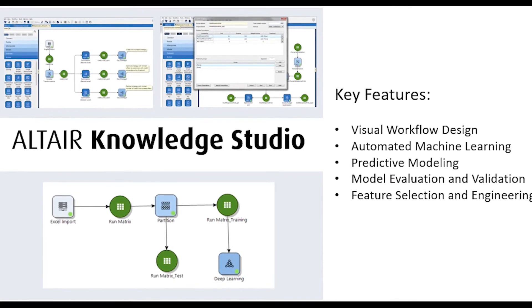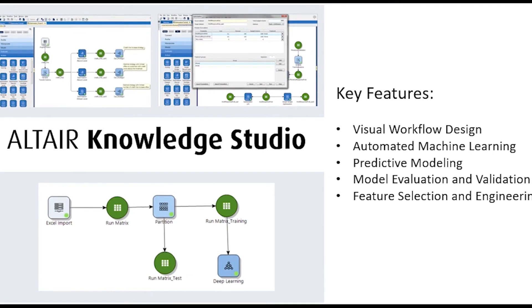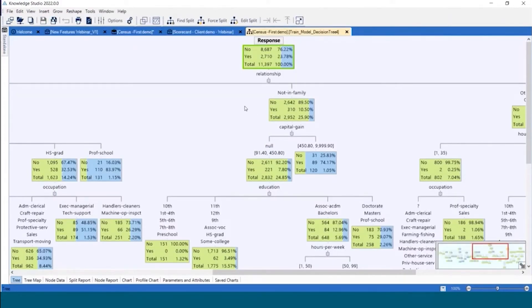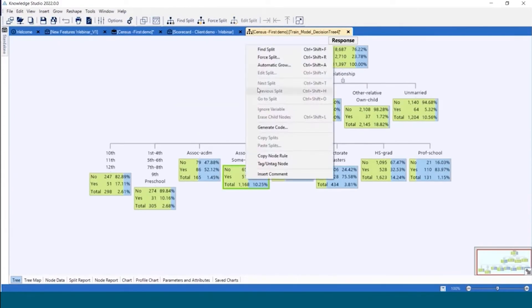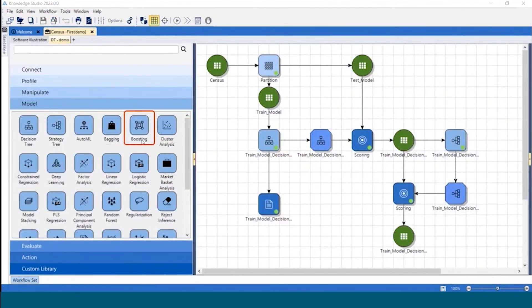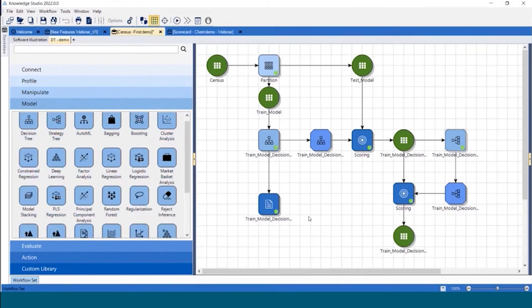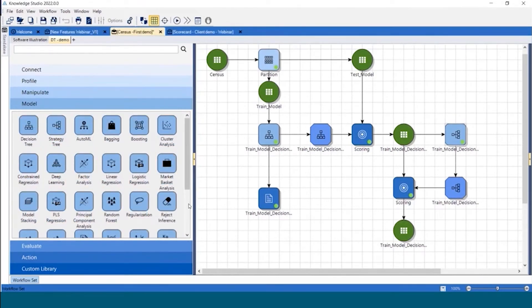The next tool I want to dive into is Altair Knowledge Studio. Users can choose to use the data pre-processing tools inside Knowledge Studio or use an integration with Monarch. Knowledge Studio enables users to build predictive models using a wide range of algorithms including regression, classification, clustering, and time series analysis. Users can then compare and evaluate different models to find the most accurate and applicable result.